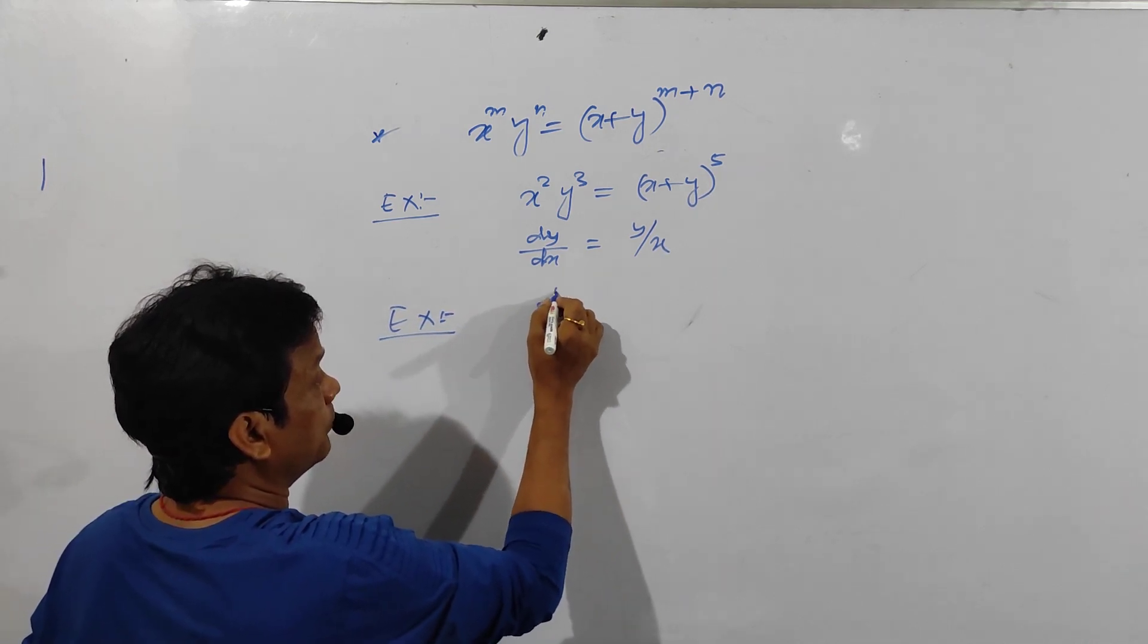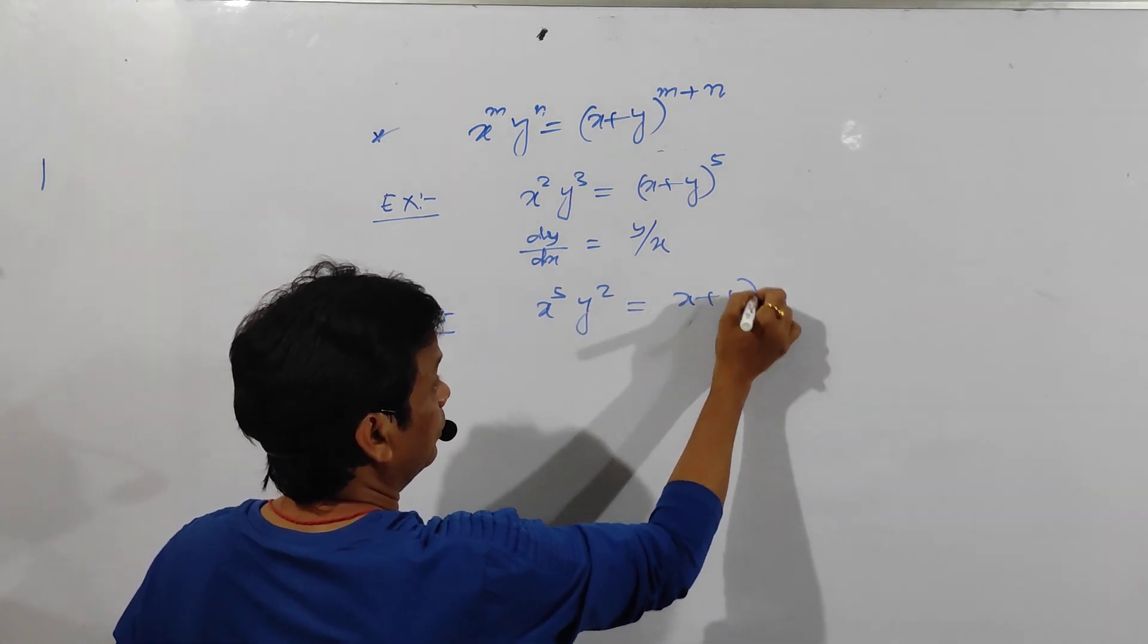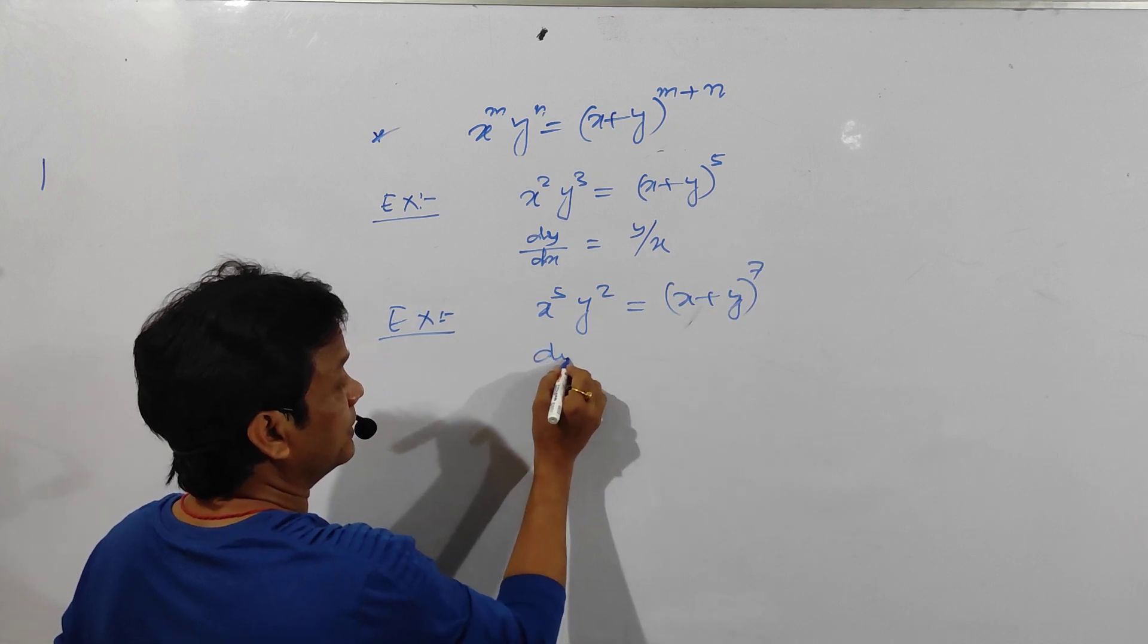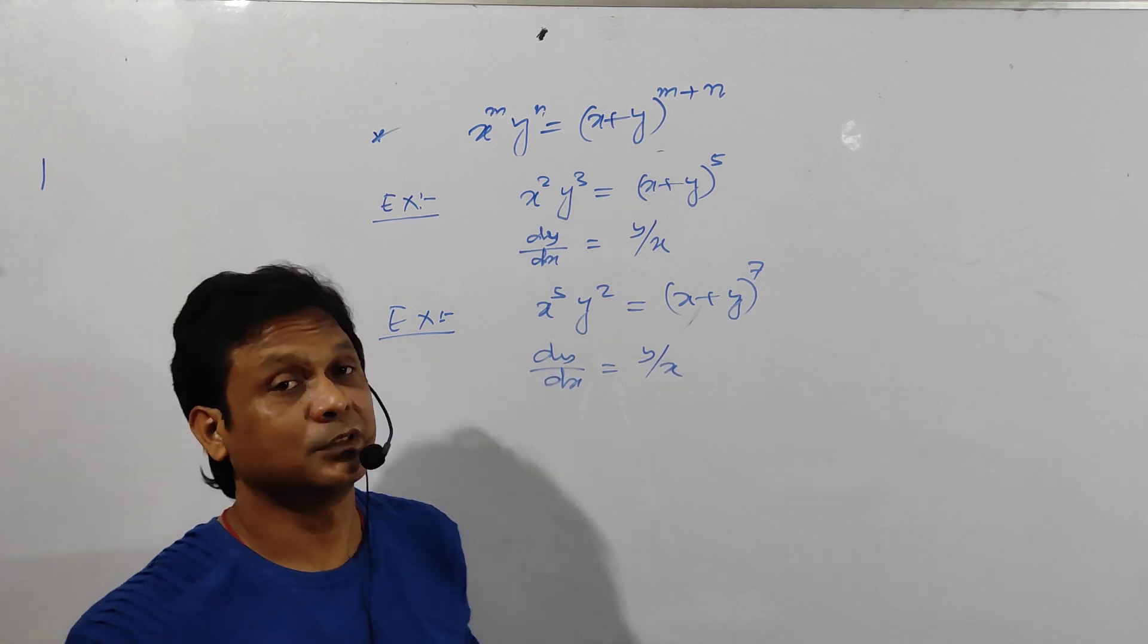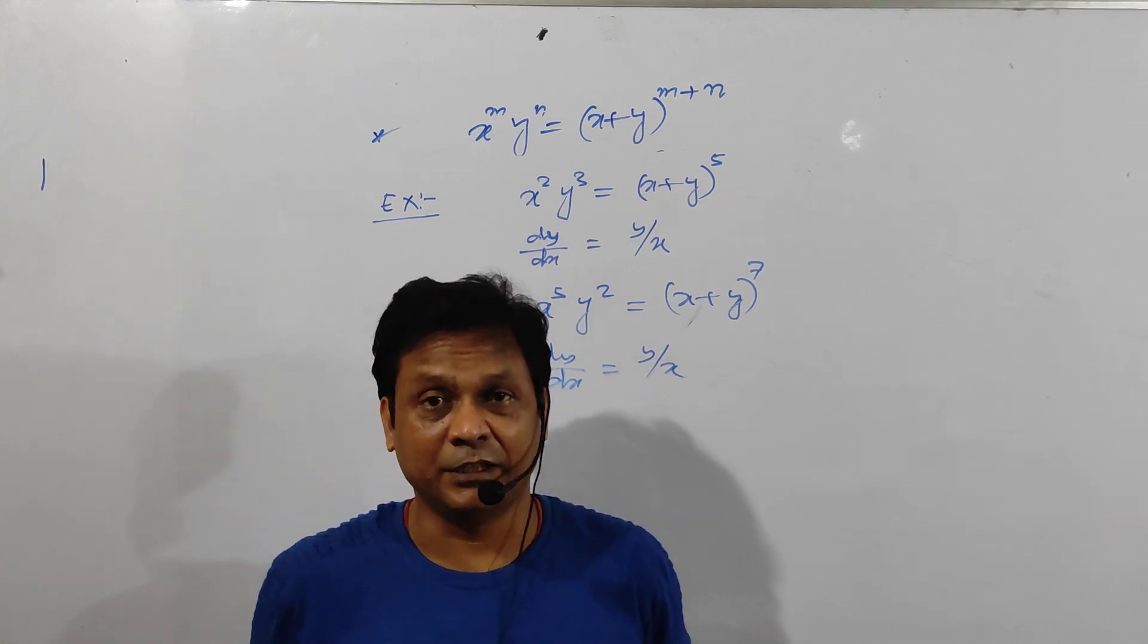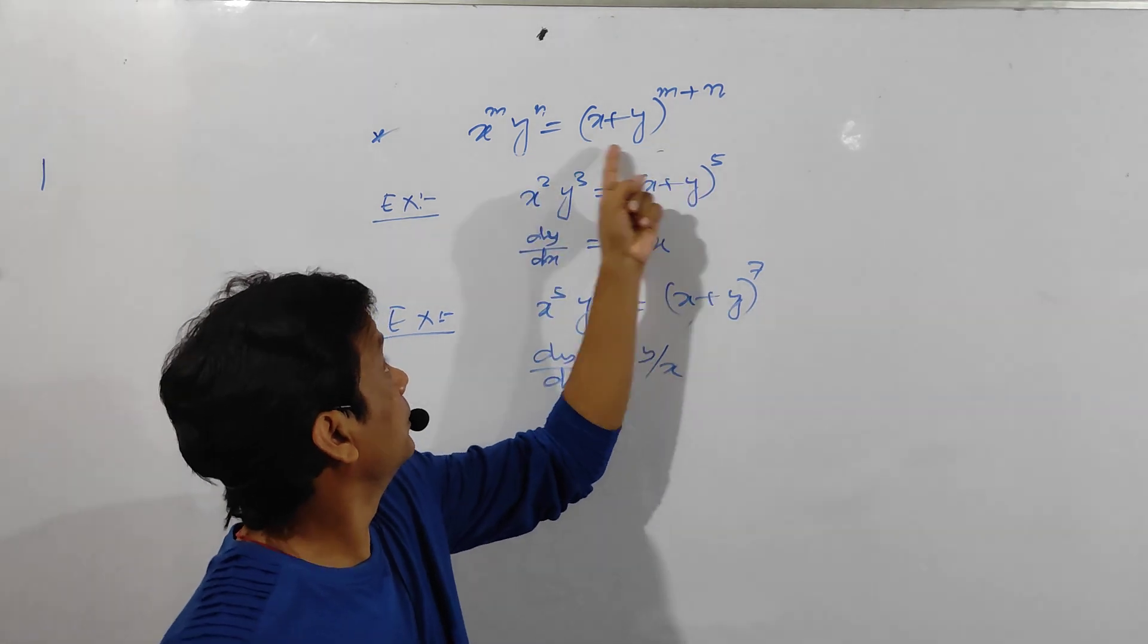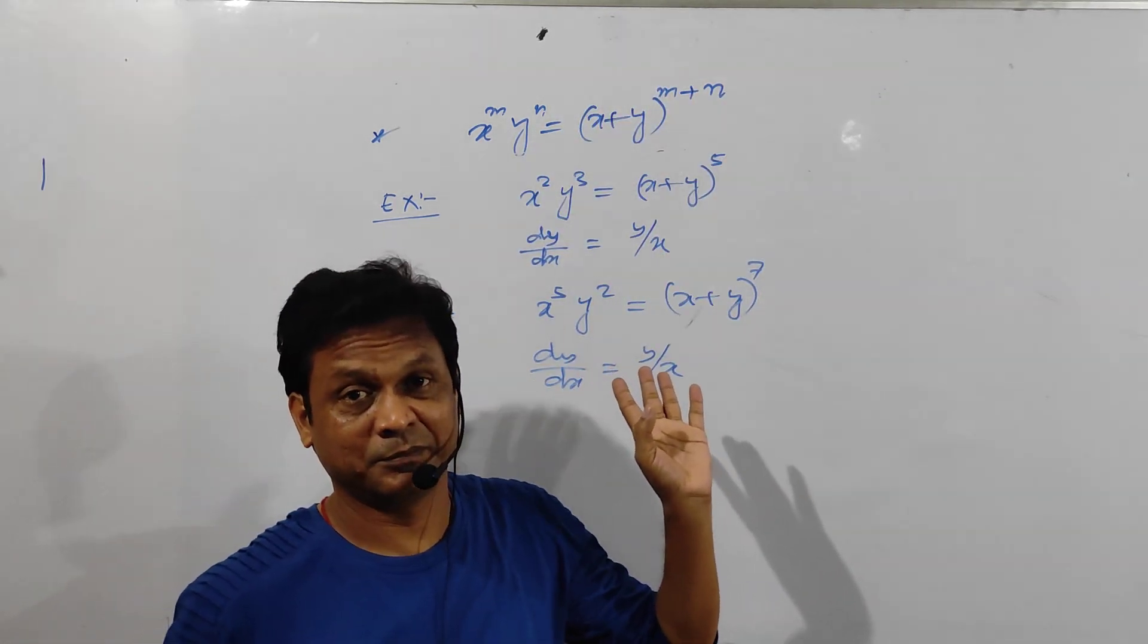Similarly another example: x to the power 5, y to the power 2 equals x plus y to the power 7, five plus two is seven. So in this case also dy by dx equals y by x. And if you see previous questions, this question was set: what is the value of dy by dx for this equation? It is simply y by x.